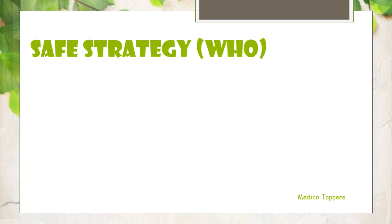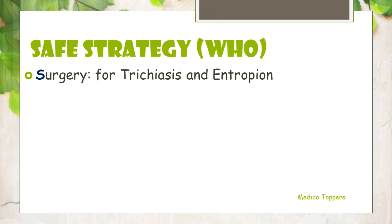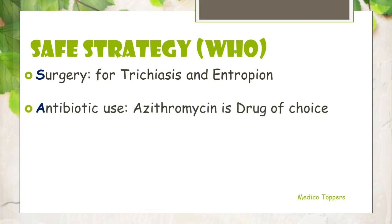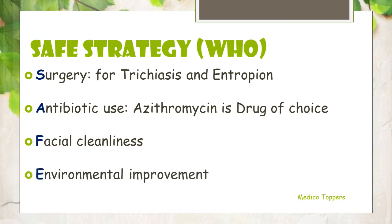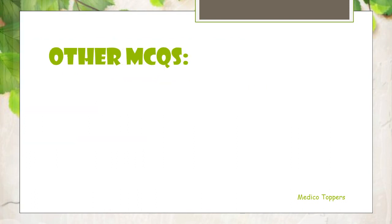One of the most important exam questions: in which disease condition do we use the SAFE strategy? That is none other than trachoma, and it was established by WHO. S stands for surgery in case of trichiasis or entropion. A stands for antibiotic use — the drug of choice is azithromycin. F stands for facial cleanliness — we have to maintain facial hygiene. E stands for environmental improvement — in case of eye-seeking flies and moist conditions, we have to improve the environment. So this is the SAFE strategy: Surgery, Antibiotic use, Facial cleanliness, and Environmental improvement.